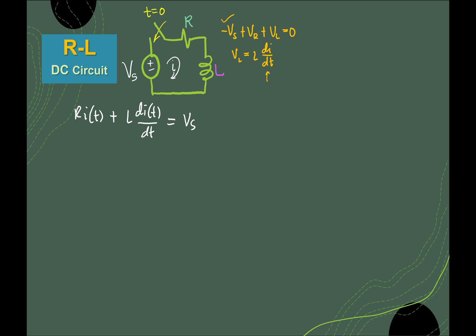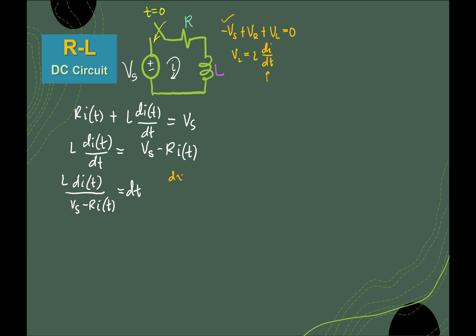Now if you have learned from your differential equations class, this is variable separable. You try to arrange equations such that the differential term is on the left-hand side and the other terms on the right-hand side, then cross-multiply and collect all i(t) terms. You can remember in your DE class: you have dx, with x equal to dt on the other side or whatever constant, so that you can do the integration.